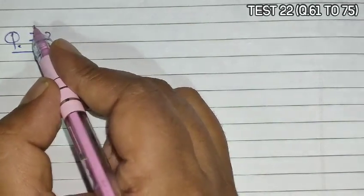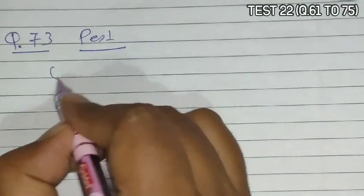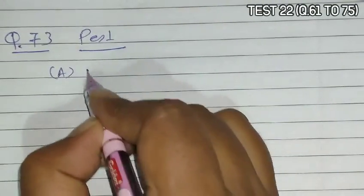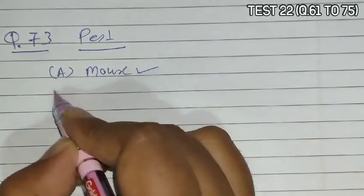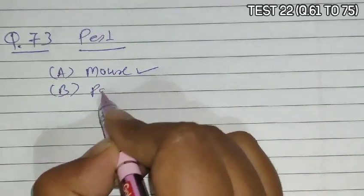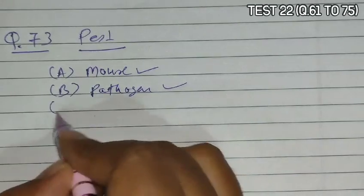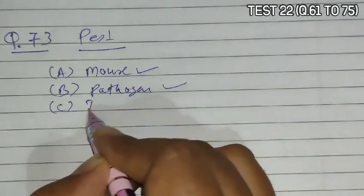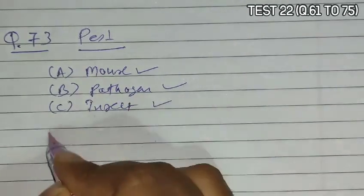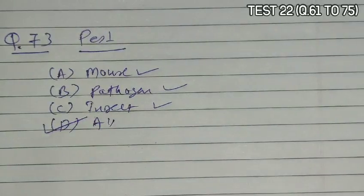Question 73 asks which one is a pest. A mouse is obviously a pest because it can affect crops. Plant pathogens are also pests. Insects are also pests. So D — all of the above — is the correct answer.